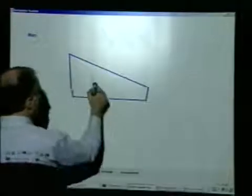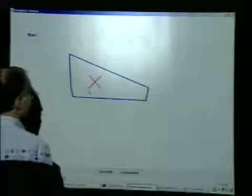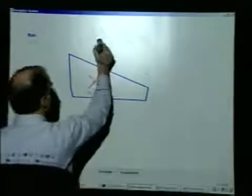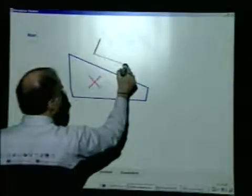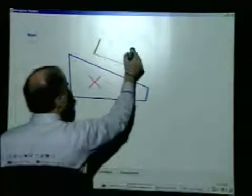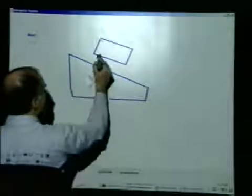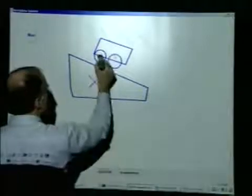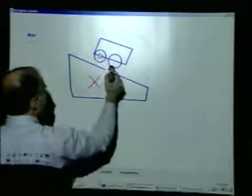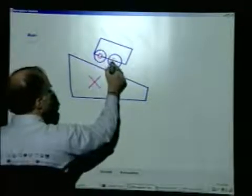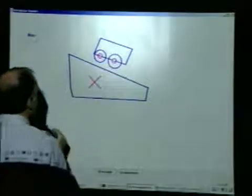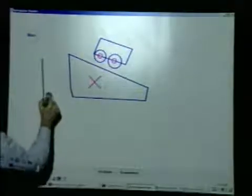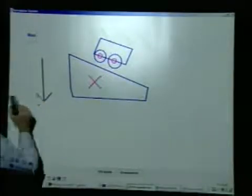I'll start by drawing a simple hill and anchor it to the background. I'll put a little cart on the hill, give it wheels, and pin the wheels to the frame with some axles. Then I'll indicate that I want gravity.